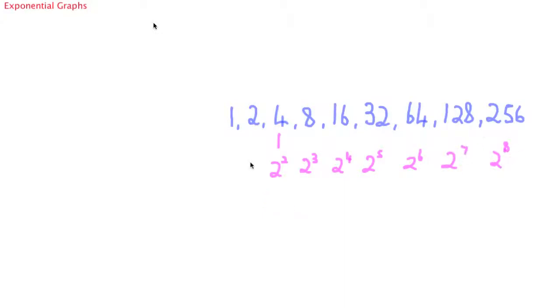Then we can go back the other way as well. We can write 2 as 2 to the power of 1 and 1 actually as 2 to the power of 0, because any number to the power of 0 is 1.